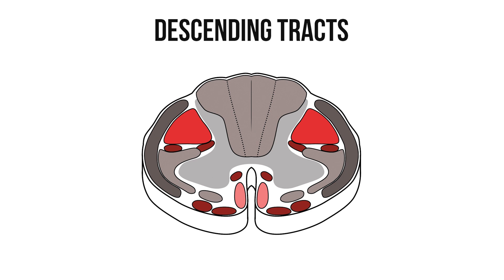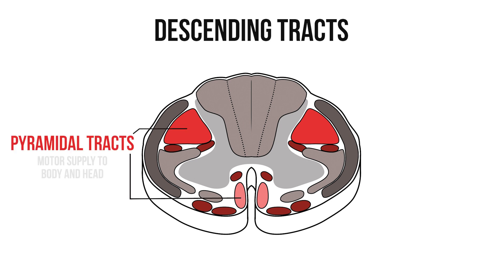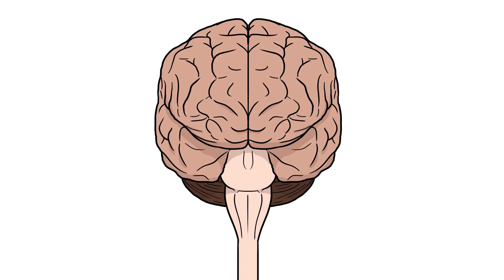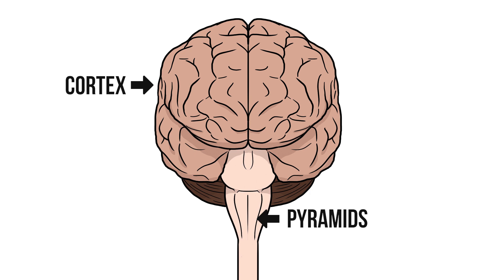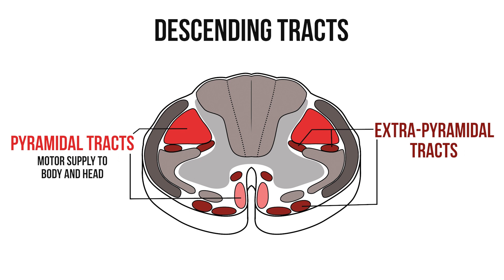Let's look at the descending tracts in a bit more detail. These motor tracts can be divided into two groups. The pyramidal tracts are responsible for the main motor control of the body and head, and are named because they pass from the cortex of the brain through the pyramids of the medulla oblongata. The extrapyramidal tracts originate in the brain stem and control involuntary and automatic motor functions such as muscle tone and posture. For this video I'm not going to say anything else about the extrapyramidal tracts, but I'll add their names and functions in the description below.